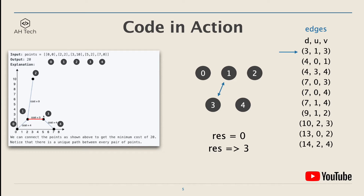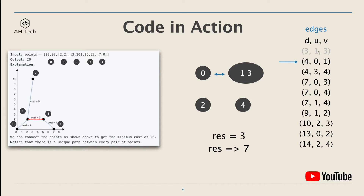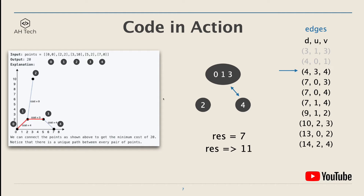Now points one and three are connected. Next, points zero and one are in different disjoint sets, so we add the distance to the result — now result becomes seven — and we union these two sets, so points zero and one are now connected. Next, vertices three and four have distance four and are in different disjoint sets, so we update result to 11, and now points three and four are connected on the plane.